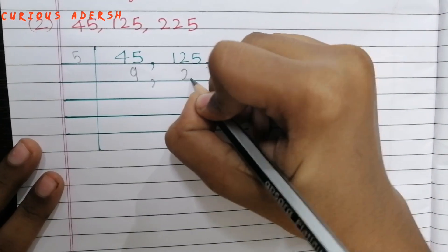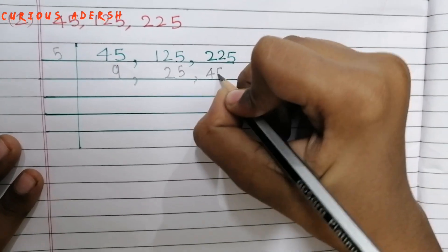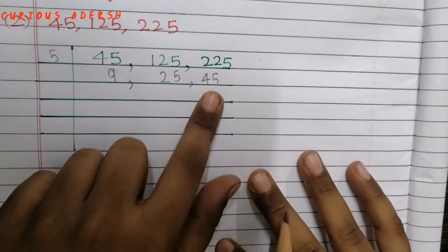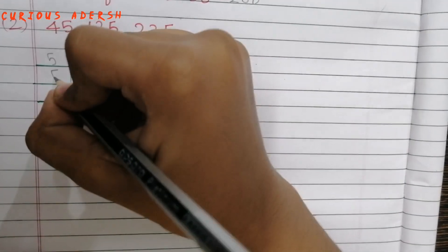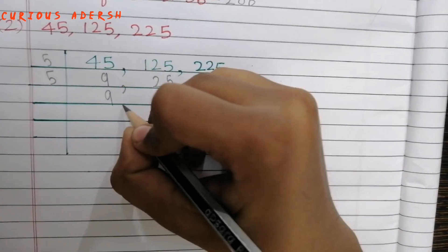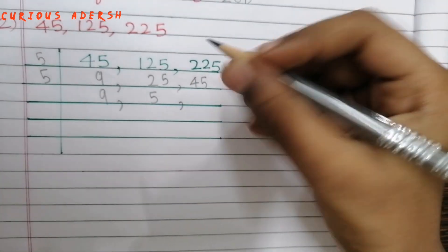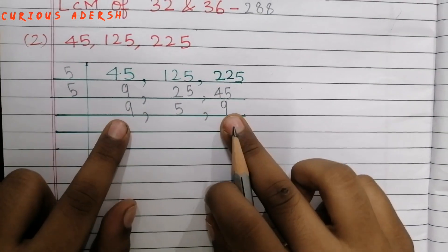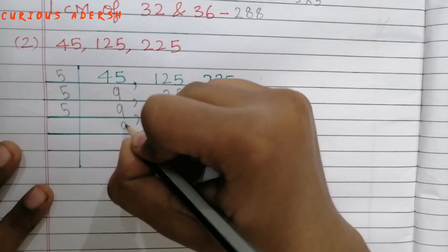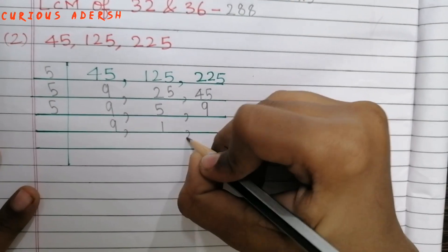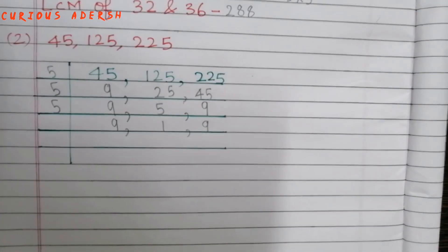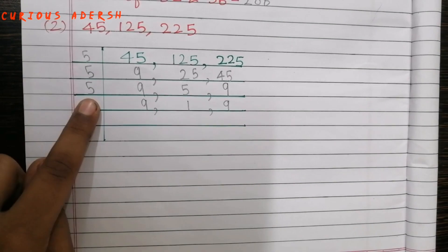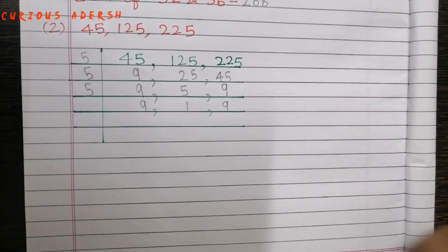We get 9, 25, and 45. We'll write 9 as it is. 25 and 45 are divisible by 5, giving us 9, 5, and 9. We'll write 9 as it is. Then 9 is divisible by 3, so we'll write 3 here.